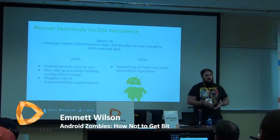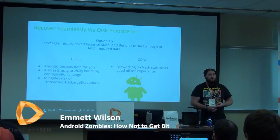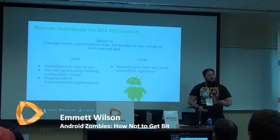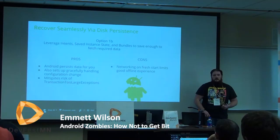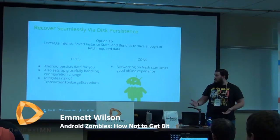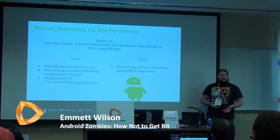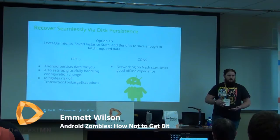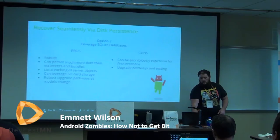A second option: instead of saving all state via Intents and Bundles, save just enough to refresh what you need — just the user ID, the product row, or the category — and then on a fresh start go to the server and pull it down. You still get the pros of Android persisting data to disk, and it sets up graceful handling of configuration change as well. It also mitigates the risk of TransactionTooLargeException but doesn't completely eliminate it, since recycler view states can get hefty too. The big con is that on a fresh start you have to deal with networking — if they're coming back with poor service, you have to handle graceful degradation.